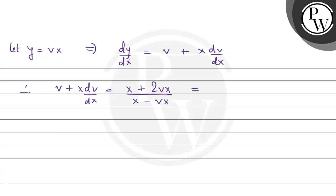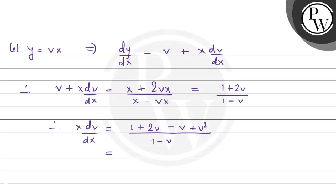Taking x common and cancelling from numerator and denominator, we get (1 plus 2v)/(1 minus v). Simplifying, x times dv/dx equals (1 plus 2v)/(1 minus v) minus v, and taking the LCM gives x dv/dx equals (1 plus v plus v squared)/(1 minus v). We can now use the variable separable method.